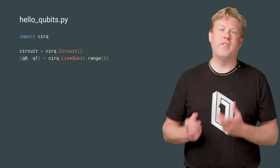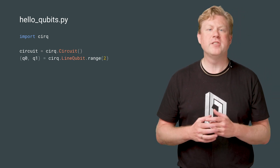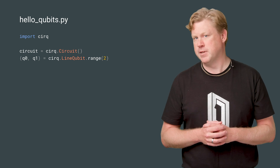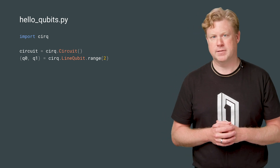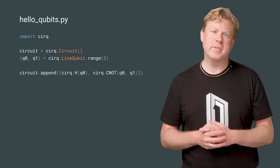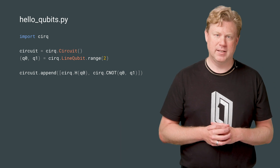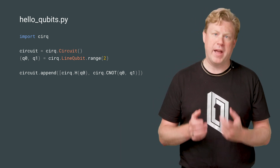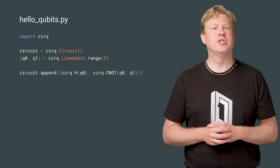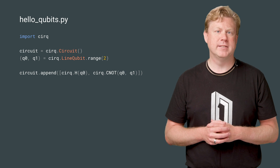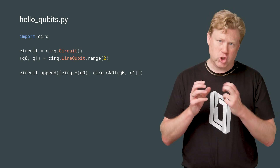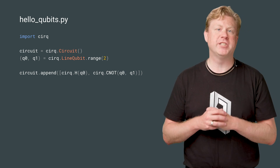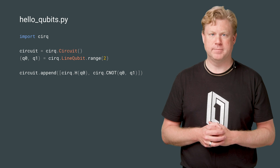Another key set of objects are qubits. Let's define two qubits with simple names. Now we can perform some quantum gates on these qubits. Let's apply a single qubit Hadamard gate, denoted by H, to one of the qubits, followed by a two-qubit controlled not, or CNOT gate between the qubits.